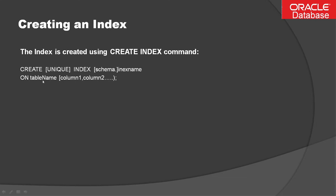The table name specifies the table on which the index is created. You can list one or many columns — these specify the column names from the table on which the index is to be created. Note that LONG or LONG RAW data types are restricted for index creation. The UNIQUE keyword specifies that the values in the indexed column must be unique, so once you create a unique index on a column, you cannot insert duplicate values.